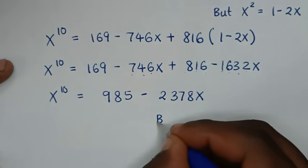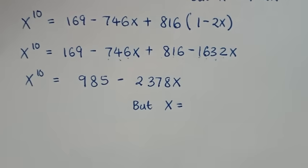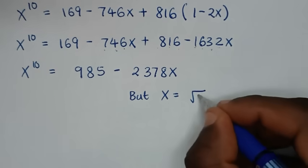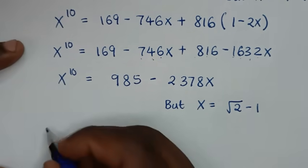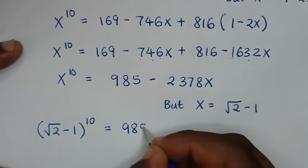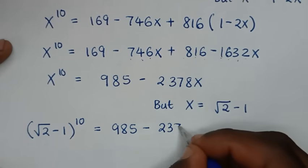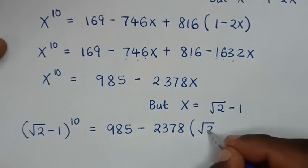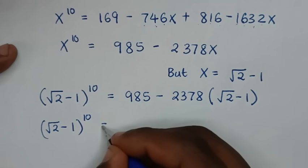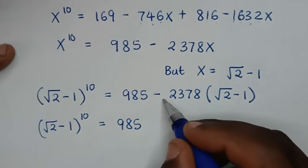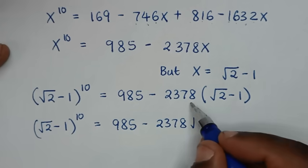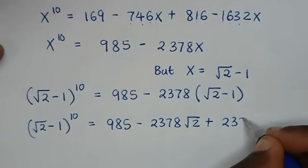Now we substitute back x equals square root of 2 minus 1. So bracket square root of 2 minus 1 bracket to the power of 10 equals 985 minus 2378 times bracket square root of 2 minus 1 bracket. Expanding: 985 minus 2378 times square root of 2 plus 2378.